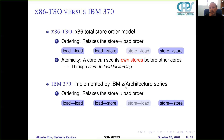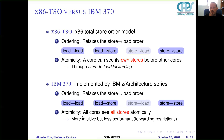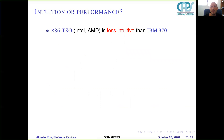IBM 370, implemented by the IBM mainframe architecture series, has the same ordering rules as x86-TSO but differs in atomicity. Here, all cores see all stores atomically. So this is a more intuitive consistency model, but is less performant, especially if we completely restrict store-to-load forwarding.